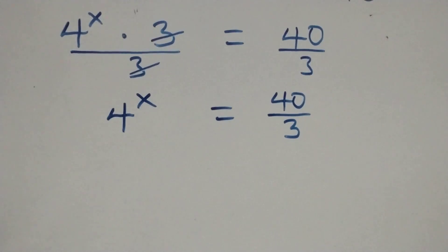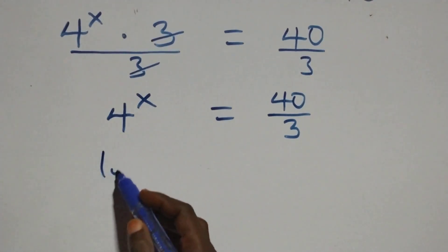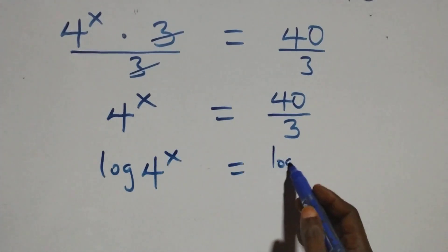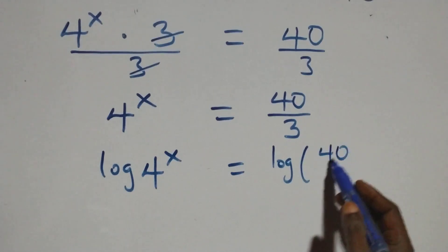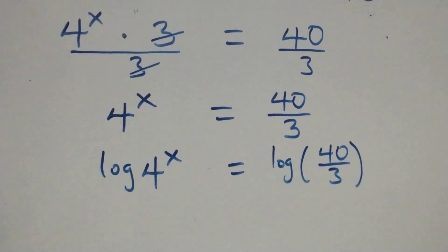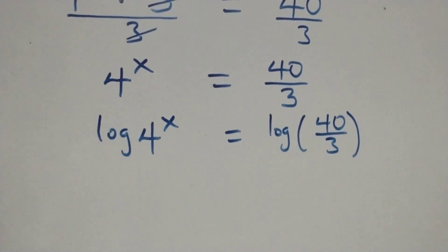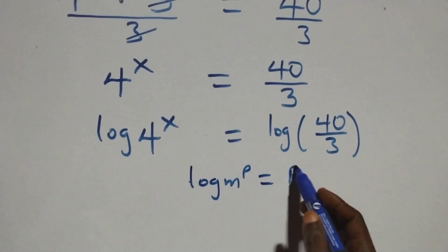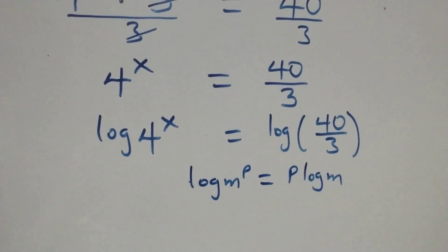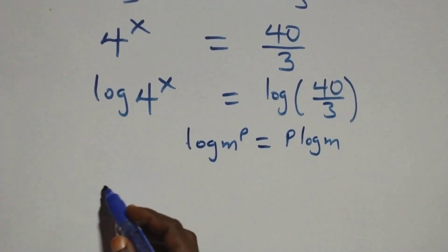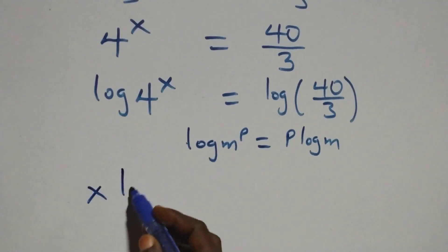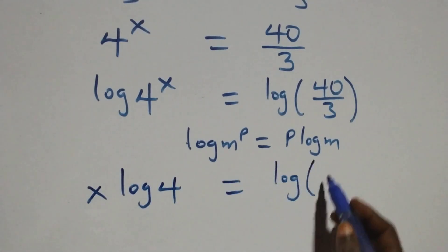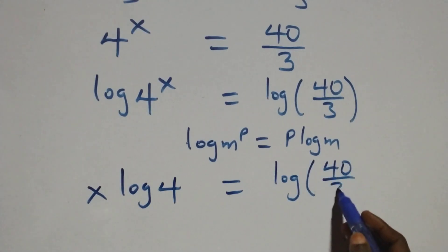The next step here, we take the log on both sides. We have log of 4 raised to power x equals to log of 40 over 3. We apply the power rule of logarithms: log m raised to power p is the same as p times log m. So this becomes x times log 4 equals to log of 40 over 3.